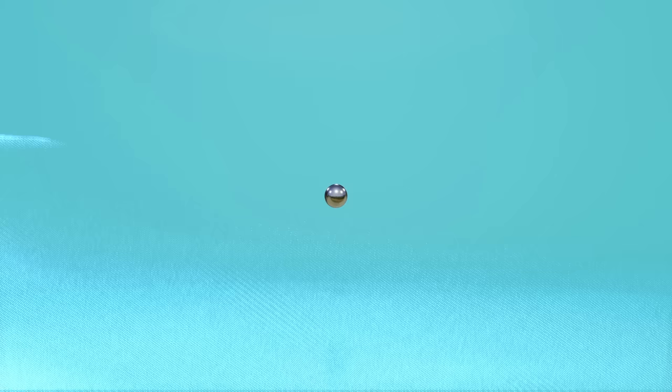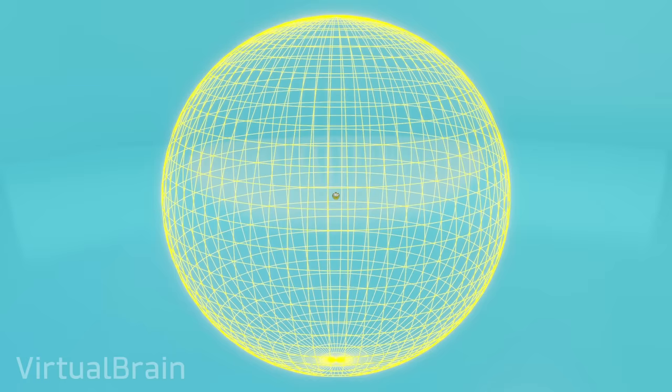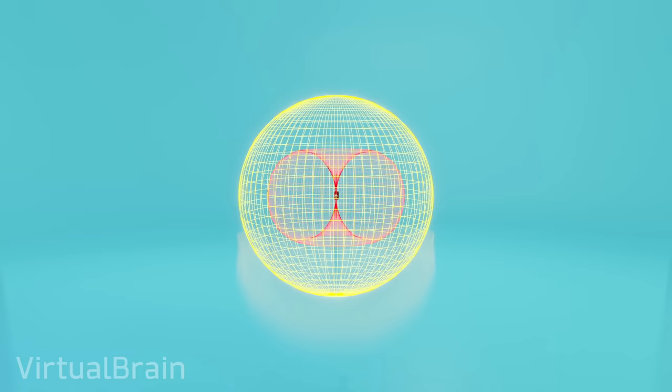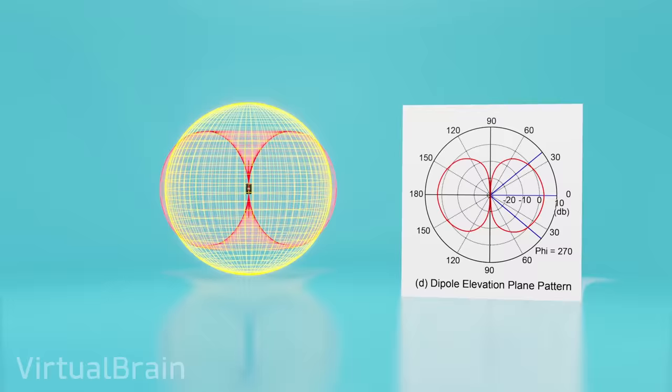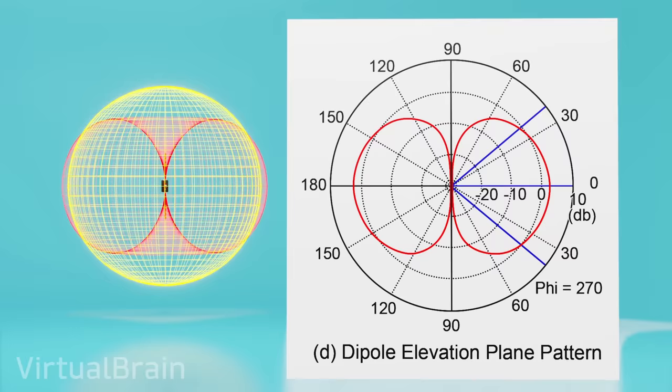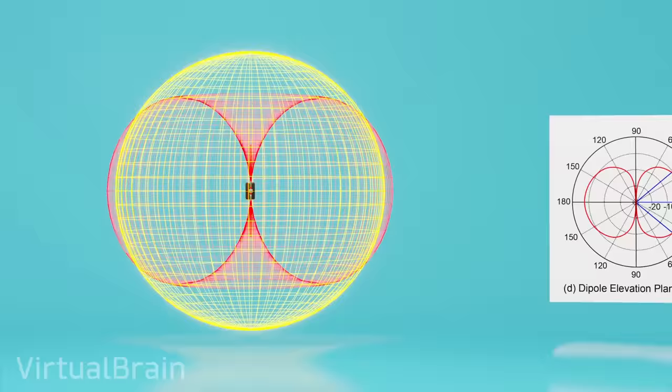In this case, an isotropic radiator is simply a theoretical reference antenna that emits electromagnetic waves with equal intensity in all possible directions. Thus, if we visualize the power density of both antennas, when the power of our analyzed antenna is higher than the density of the isotropic antenna, we will have positive isotropic decibels, and when it is lower, we will have negative isotropic decibels.